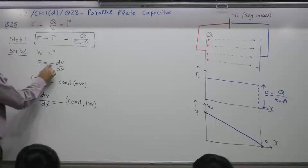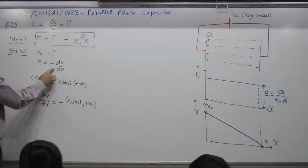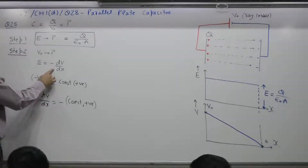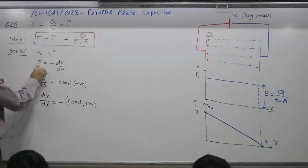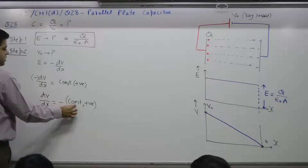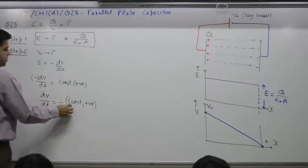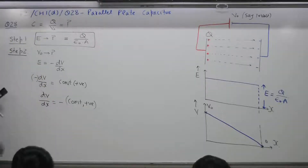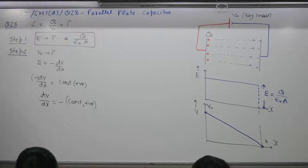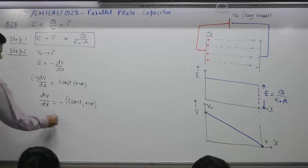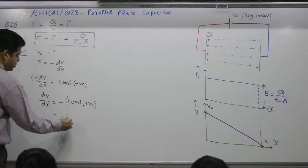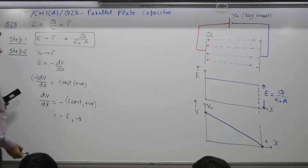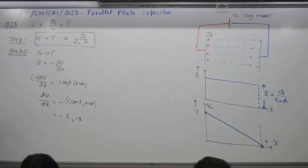Concept recap: E equals minus dV by dx, covered in previous questions. E is a constant. So dV by dx equals minus some positive constant — for example E equals minus 2, minus 3. This is what we get.